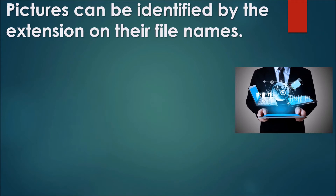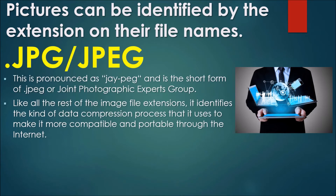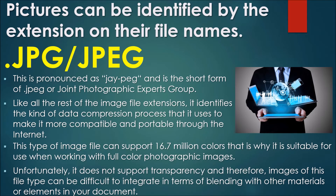Pictures can be identified by the extension of their file names. A. JPEG — pronounced as JPEG — is the short form of .JPEG or Joint Photographic Experts Group. It identifies the kind of data compression process that it uses to make it more compatible and portable through the internet. This type of image file can support 16.7 million colors, making it suitable for working with full color photographic images. Unfortunately, it does not support transparency, and therefore images of this file type can be difficult to integrate in terms of blending with other materials or elements in your document.